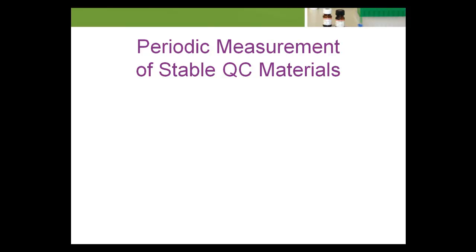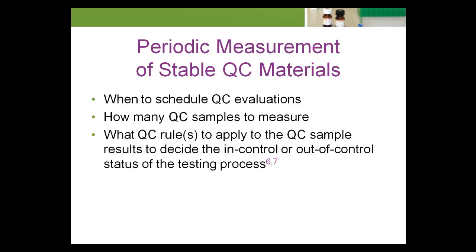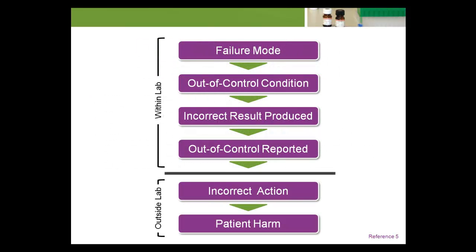Defining a QC strategy based on the periodic measurement of stable QC materials involves answering three questions: number one, when to schedule QC evaluations; number two, how many QC samples to measure; and number three, what QC rules to apply to the QC sample results to decide the in-control or out-of-control status of the testing process. Given the answers to these questions, the performance characteristics of the QC strategy can be quantitatively assessed. The outcome metric that best fits into the overall model is the expected number of incorrect patient results produced and reported due to an out-of-control condition of a given type and magnitude.